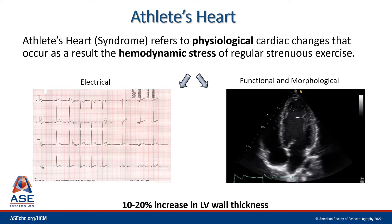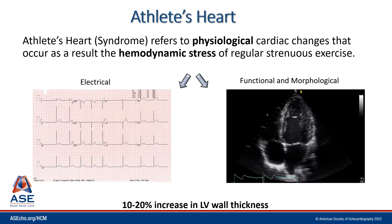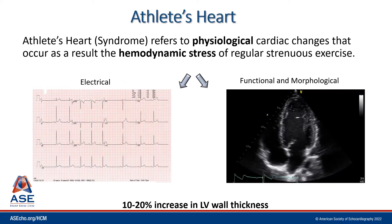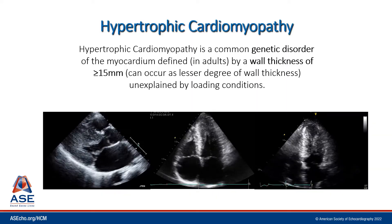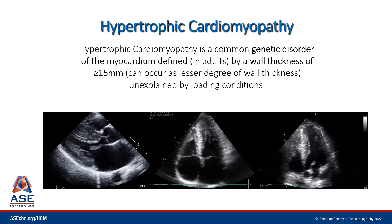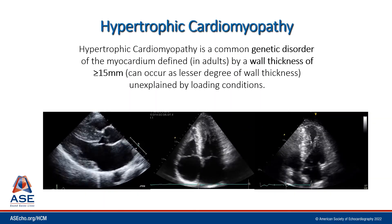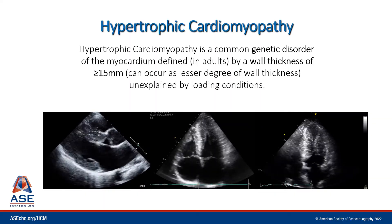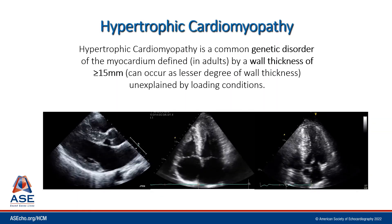We'll often see a 10 to 20% increase in left ventricular wall thickness in patients with athlete's heart. Hypertrophic cardiomyopathy, on the other hand, is the most common genetic abnormality of the heart muscle, and it's characterized in adults by a wall thickness of greater than or equal to 15 millimeters, unexplained by loading conditions.